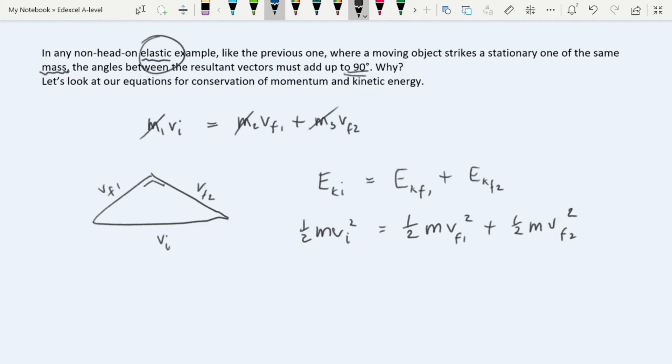Again, we know all these masses are equal, so we can cancel out the masses. Because that's one of the conditions for which this is true. And also, of course, we can cancel out the halves. And so we're left with our equation being vi squared is equal to vf1 squared plus vf2 squared. That is the hypotenuse of our triangle. And this is the sum of the squares of the other two sides. And of course, as you know, that is Pythagoras' theorem. And Pythagoras' theorem applies to right-angled triangles. Therefore, this triangle must be right-angled.